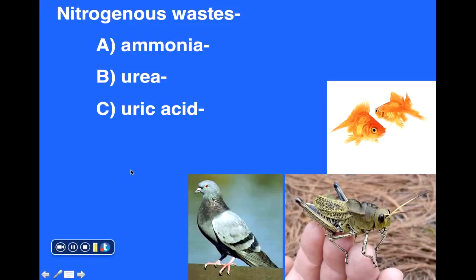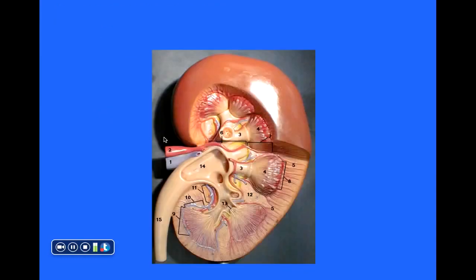If you think of a bird dropping, you might notice there's often a dark component and also a white colored component. It's that white component of bird droppings that essentially is uric acid — a highly concentrated form of nitrogen, not very soluble in water. So it's an effective way for animals such as birds and insects to get rid of their nitrogenous waste products.